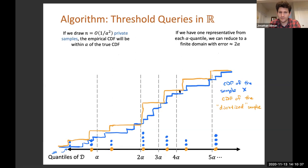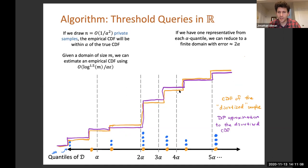Then we took all of our blue points and we snapped them to the nearest representative. This gives us a new CDF, which is the one I drew in orange. This CDF is a good approximation to the CDF we want, which is the blue CDF. Moreover, the domain for this orange CDF is only 1 over alpha different points. It's only supported on the orange points.